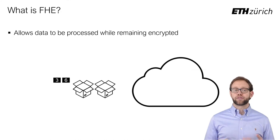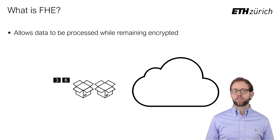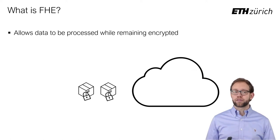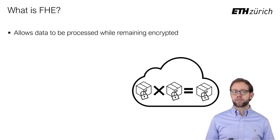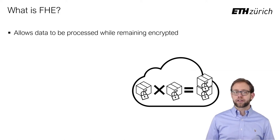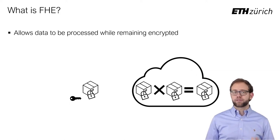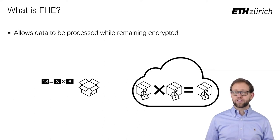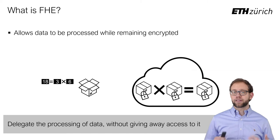Fully homomorphic encryption, or FHE, allows a third party to perform arbitrary computations on encrypted data. That means the user can encrypt some values and send them to the cloud, which can then perform computations over the ciphertext without learning the inputs or the computation results. The client can still decrypt the resulting ciphertext to retrieve the computation result. Effectively, using FHE, we can delegate data processing without having to give away data access.